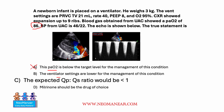What about option B? The ventilator settings look okay. If you see the tidal volume is 21, which is 7 per kilo, so that should be okay as a starting point. And the other thing that is reassuring is the expansion up to nine ribs. So again, B is not the right choice here.